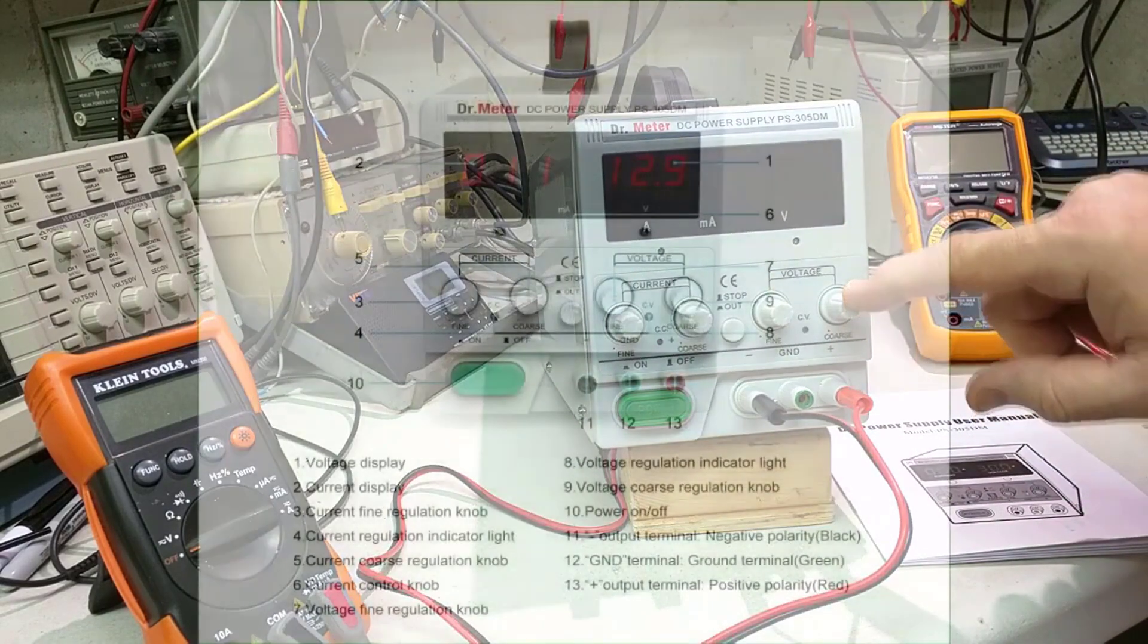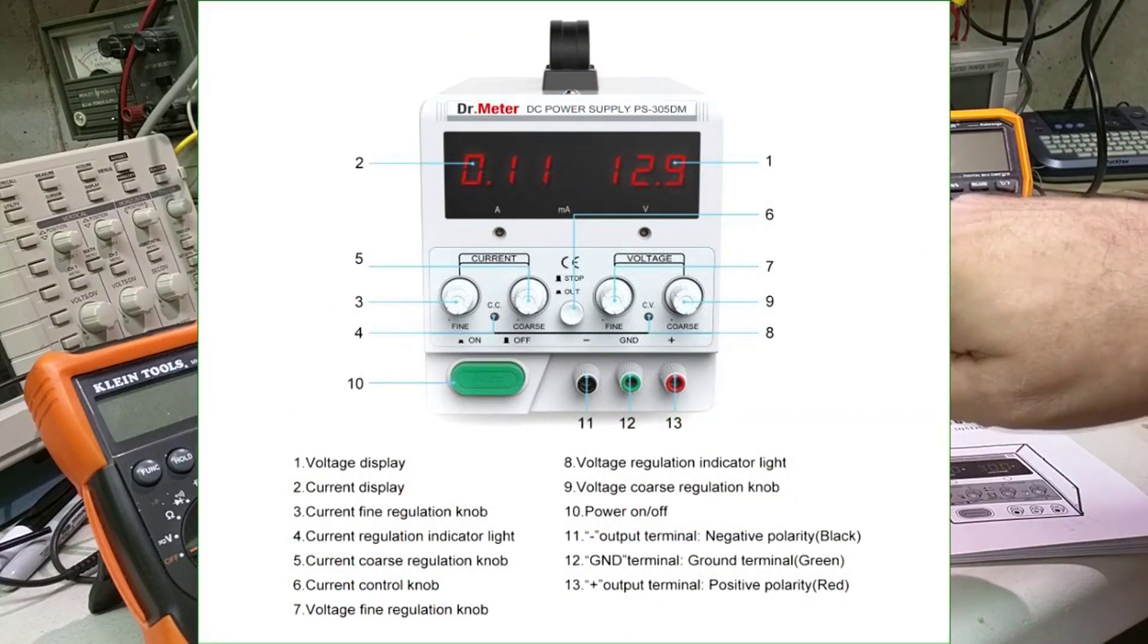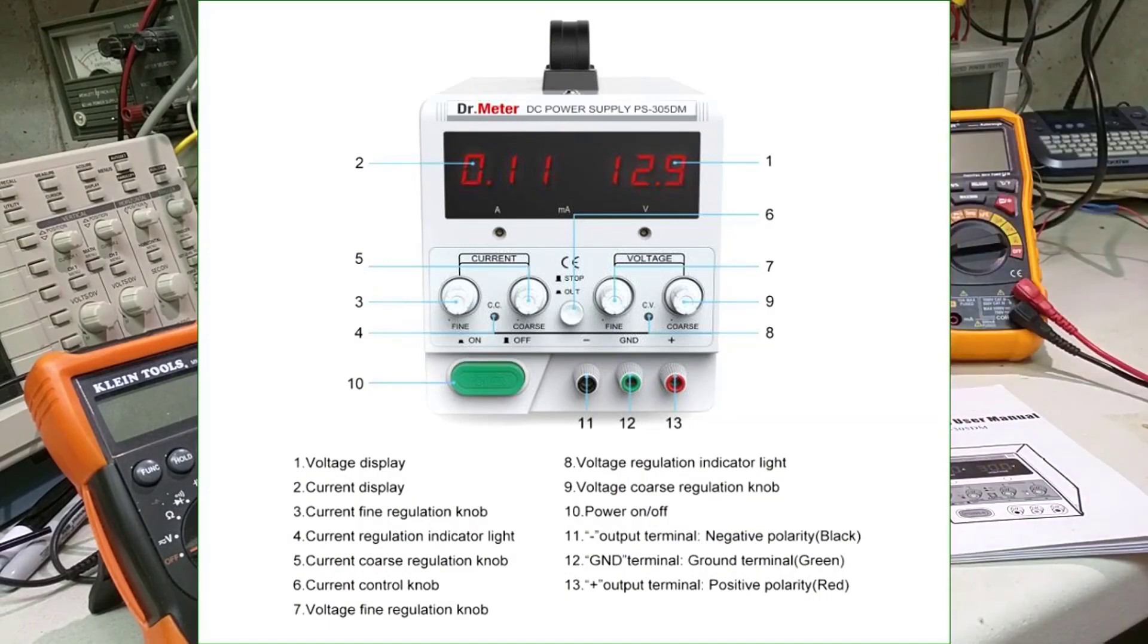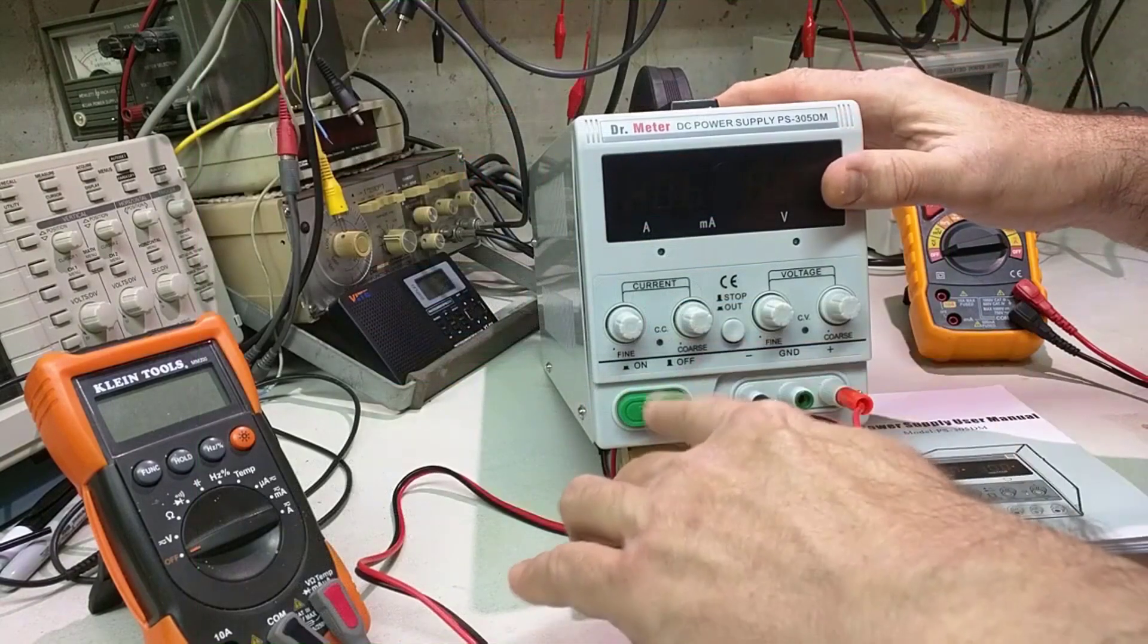The Yescom adjustable switching power supply has 0-30V of output voltage and 0-10A of output current adjustment. With a maximum of 30V and 10A, this power supply can provide 300W of continuous power with both CC and CV modes.